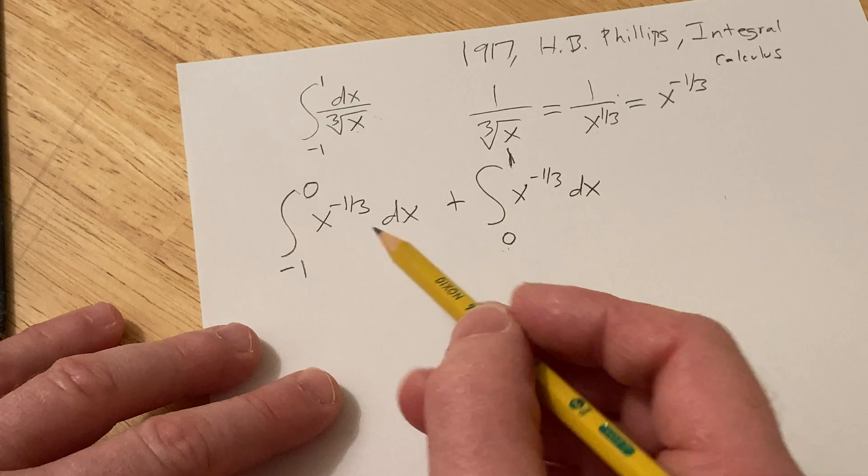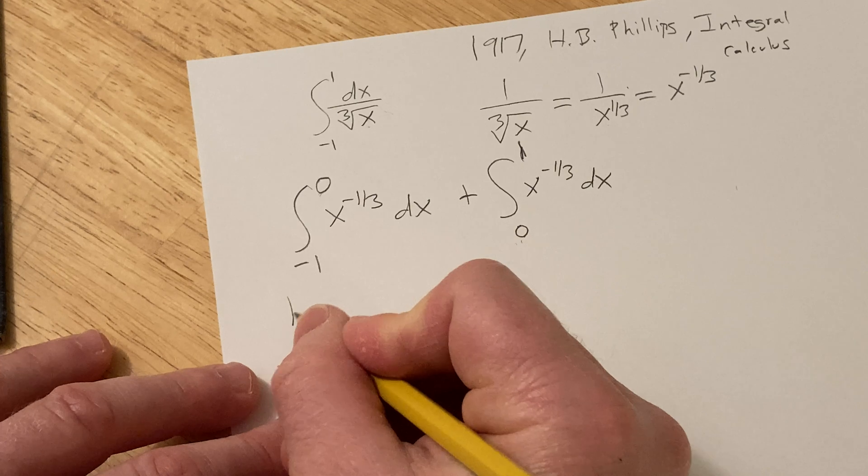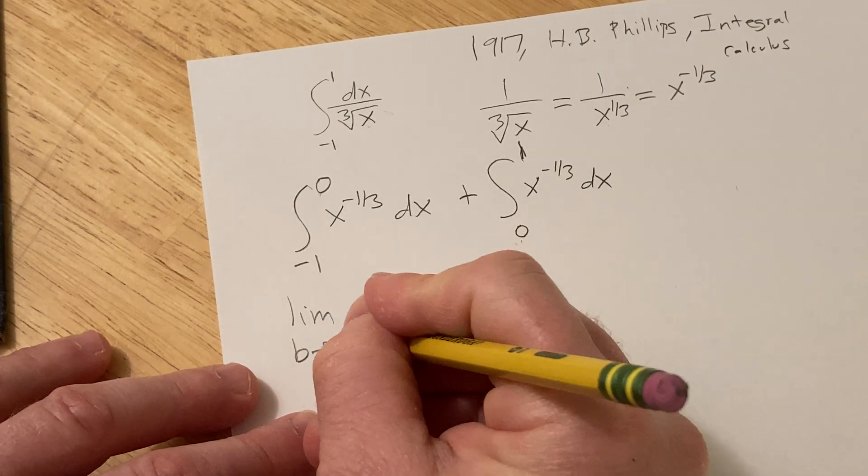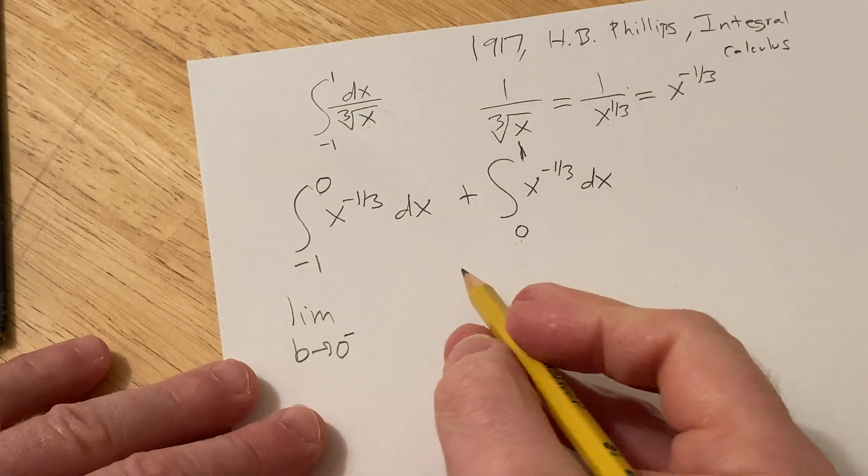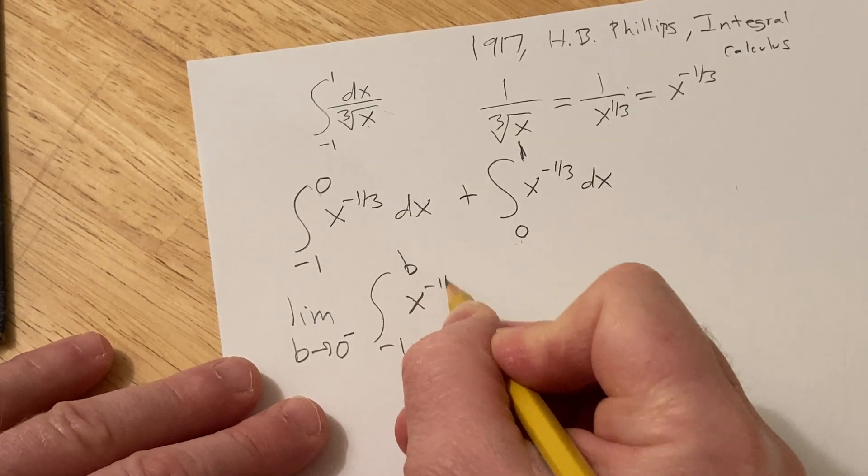Then we take limits as our variables approach zero. I'm going to replace this with a b and take the limit as b approaches zero from the left, and I'll explain that in a second. So this is negative one to b, x to the negative one-third dx.